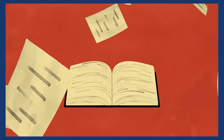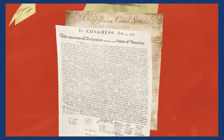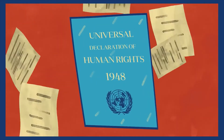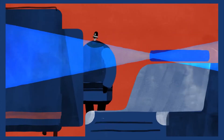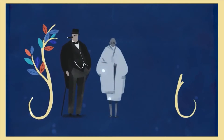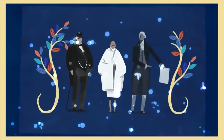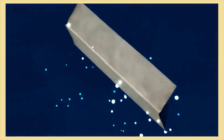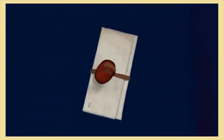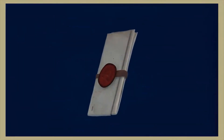Magna Carta has lived on for 800 years and is echoed in the United States Declaration of Independence and the Universal Declaration of Human Rights. Perhaps Magna Carta's most important legacy is that everyone, including our leaders, must obey the law. What started out as a document of specific complaints from a group of barons has turned into an international symbol of liberty, without which we might not have the rights we value so much today.